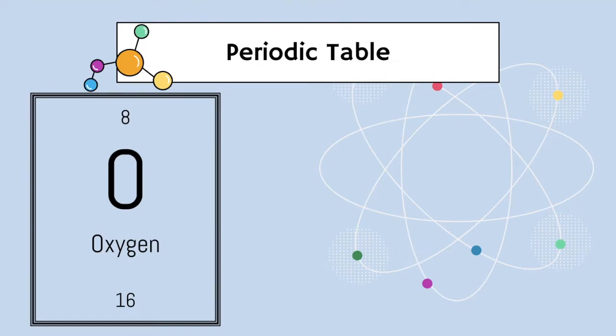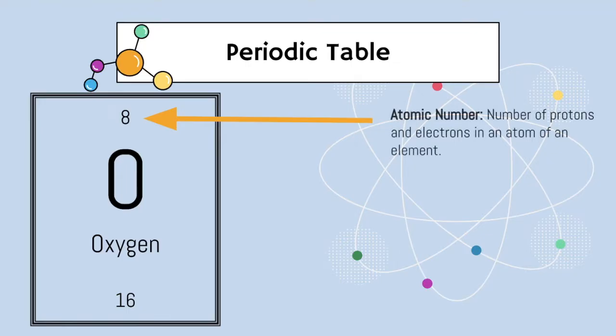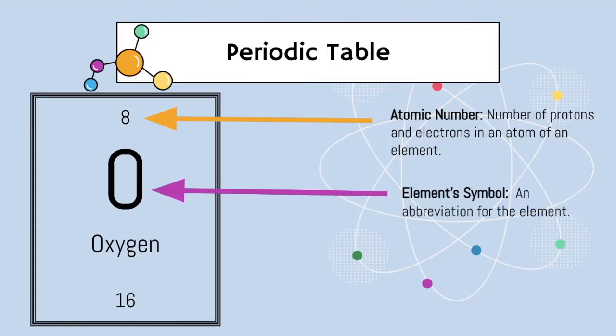Let's look at the periodic table and what it tells us. First off, atomic number — it's the number of protons and electrons in an atom of an element. The element symbol is an abbreviation for that element. Take oxygen: O stands for oxygen, and it's easy for us. Now that abbreviation can be one letter, it can be two letters, or it can even be three letters.